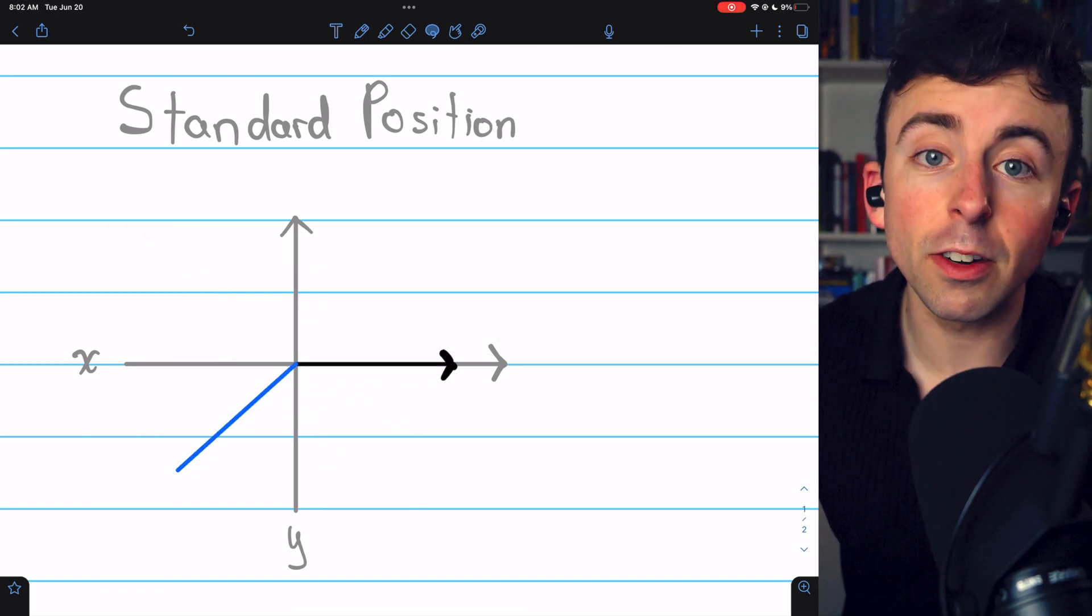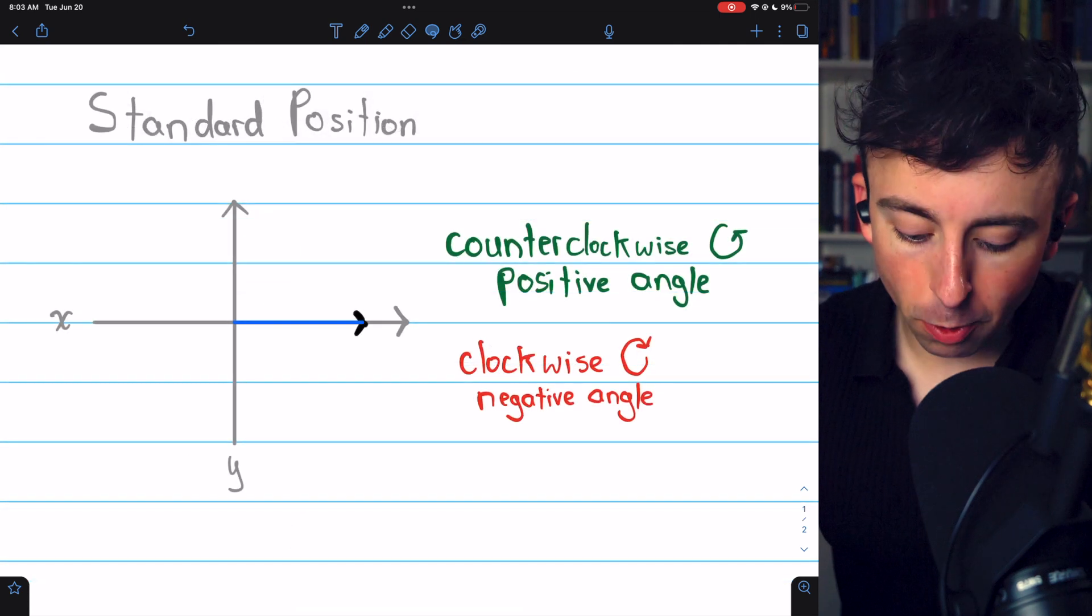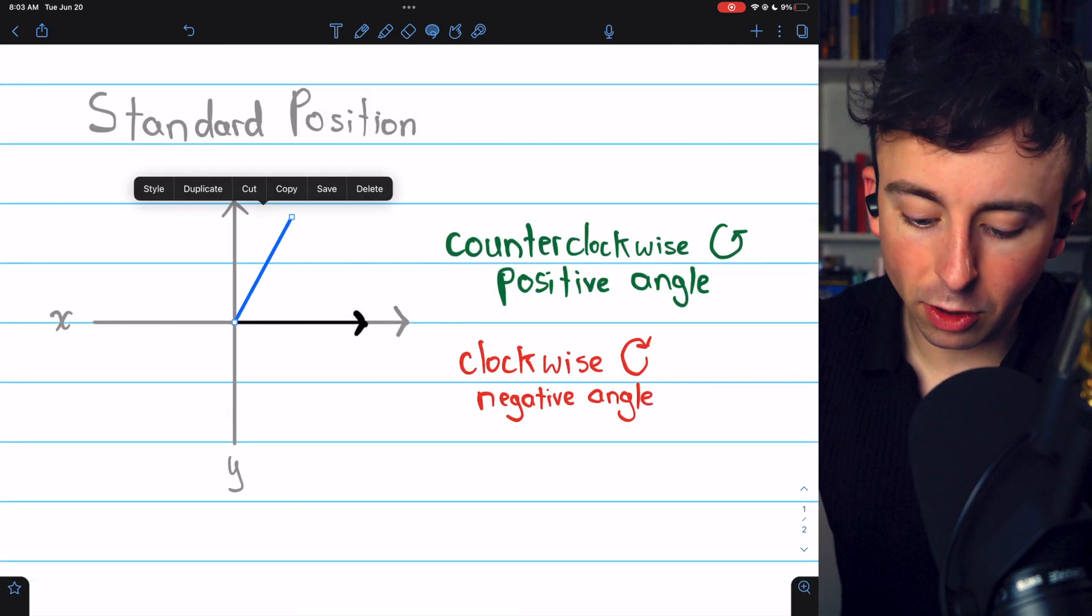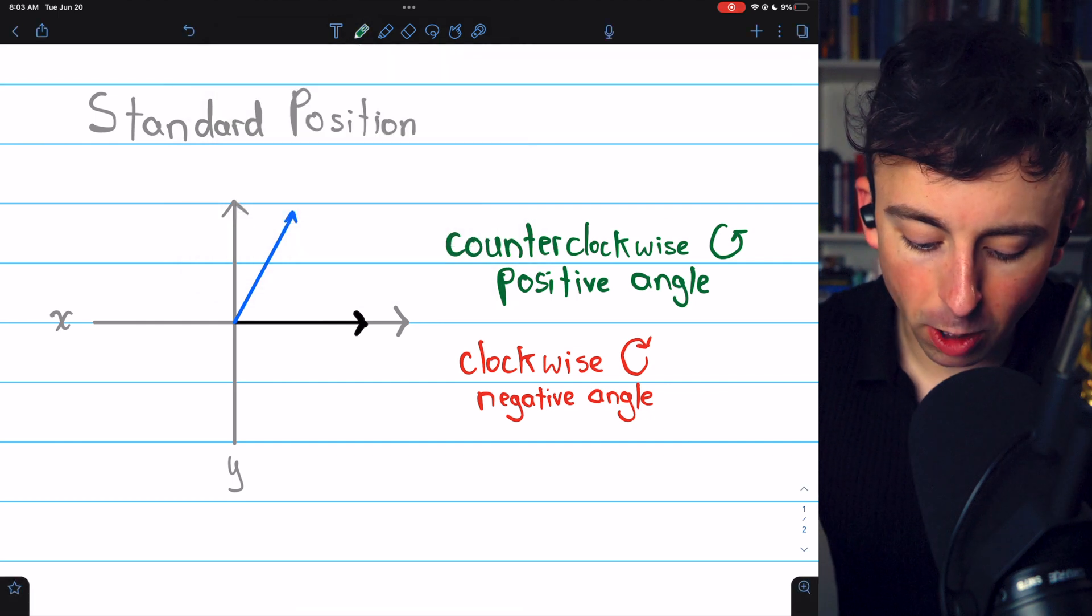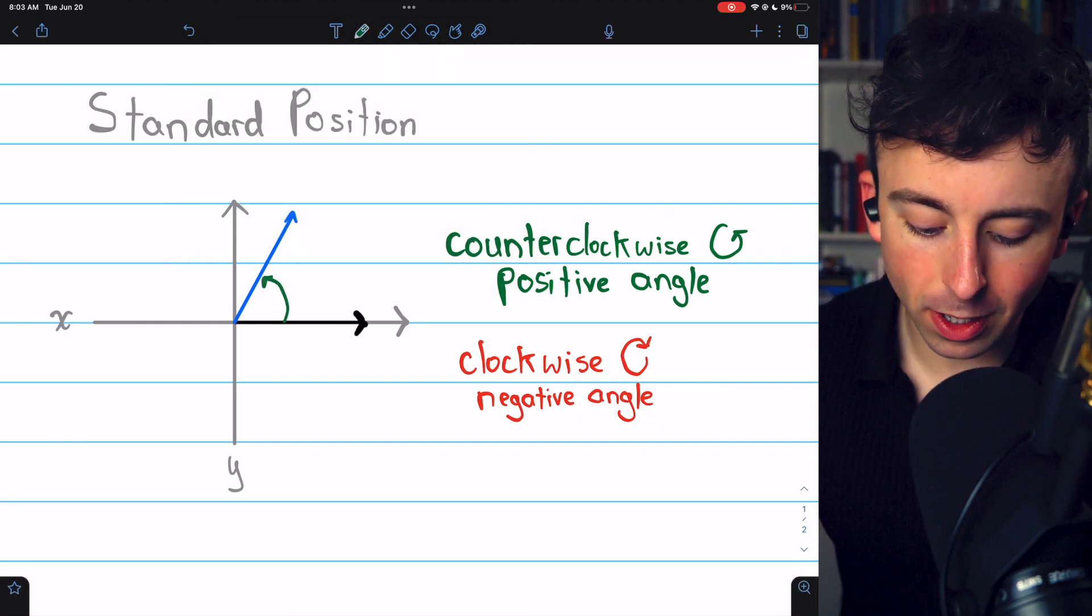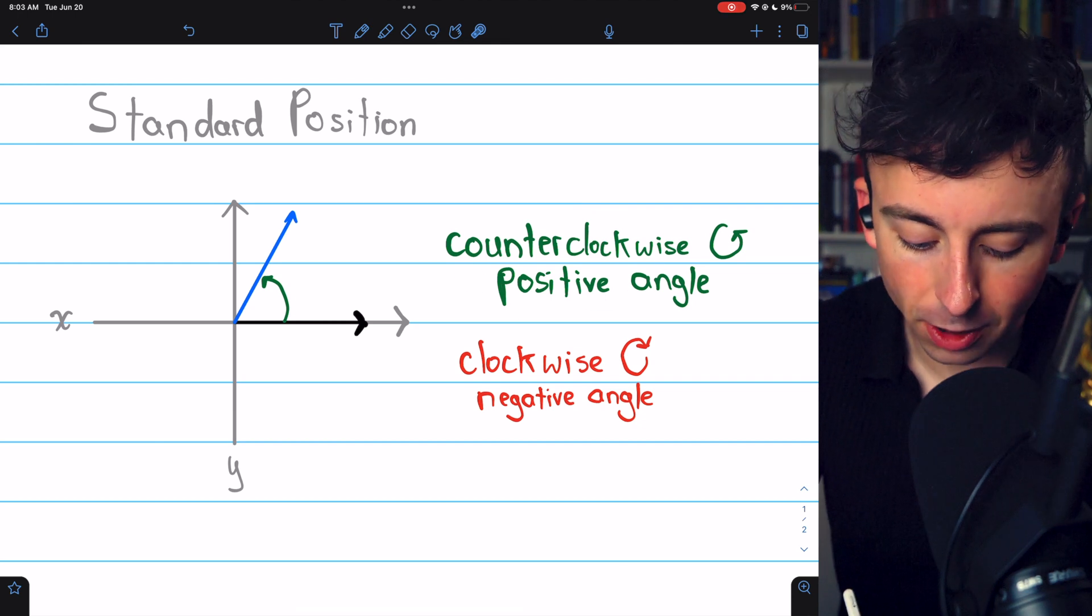I might create this angle by rotating the terminal side counterclockwise, and then I could draw an arrow to indicate that direction. Clearly, then, this is a positive angle.